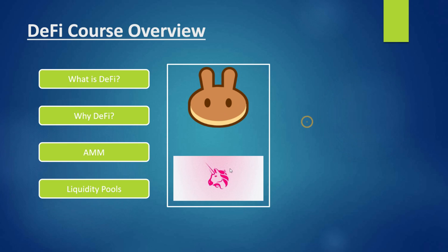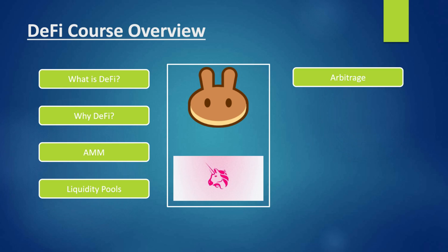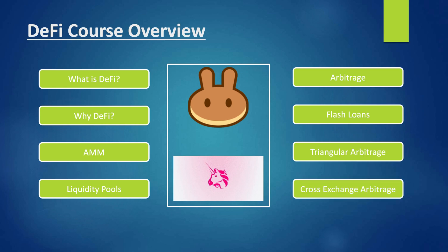Once we are comfortable reading smart contracts on Uniswap and PancakeSwap, we will start with the arbitrage lecture — understanding what arbitrage is — and then we will talk about flash loans. Not only will we study these topics, we will also do practicals where we implement both flash loans and arbitrage, including how to do triangular arbitrage and arbitrage between two different exchanges.